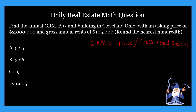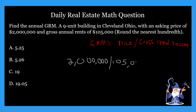So that's your core formula. Now let's plug it in — it's super simple. I'll use white to make it easier to see. In our case, you take that $2 million and divide it by $150,000. What does that give us? That gives us D, or 19.05.